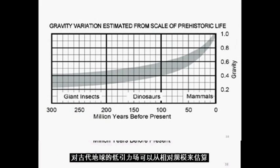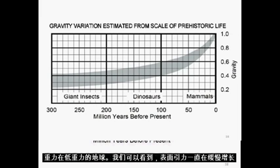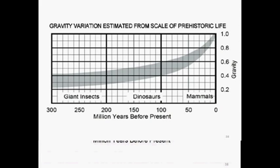The low gravitational field on the ancient Earth can be estimated from the relative scale of ancient life. This graph indicates the probable change in gravity on a reduced-gravity Earth, based on ancient life. We can see that surface gravity has been slowly increasing over hundreds of millions of years.